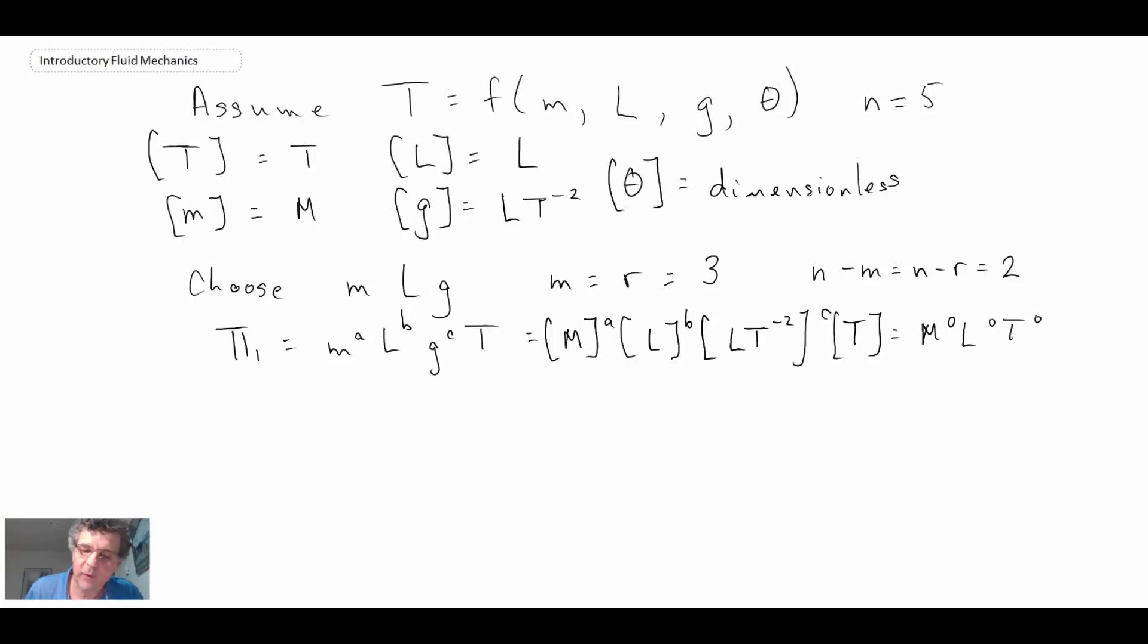So let's begin with pi 1. So going through, starting with our mass term, we find a is equal to 0. Looking at dimension of length, b plus c is equal to 0. And we have to move on to time in order to find c. So we get c is 1 half and then we can go back up and determine b to be minus 1 half.